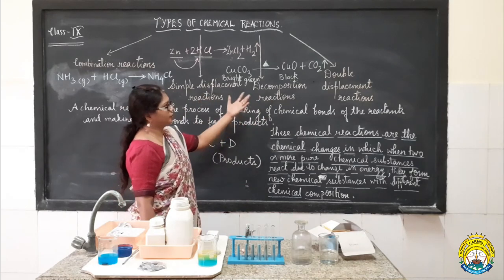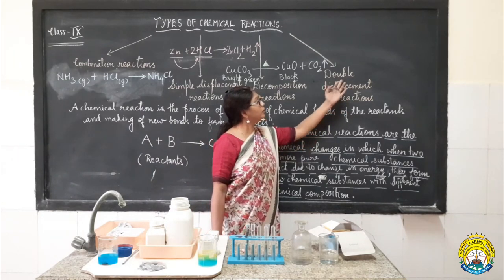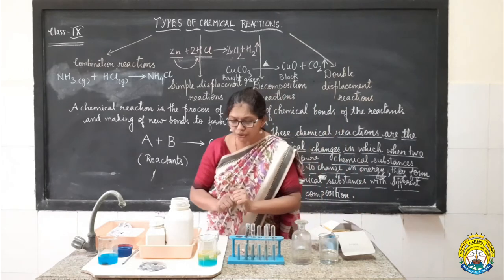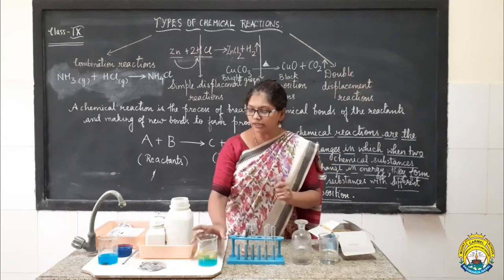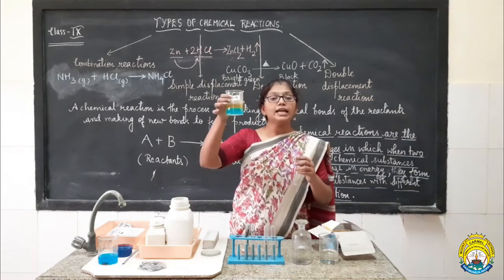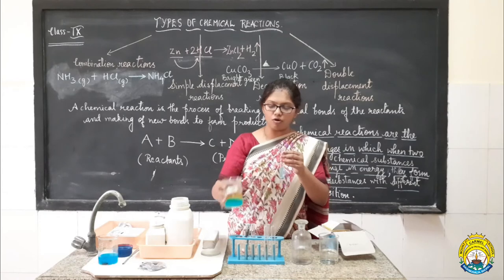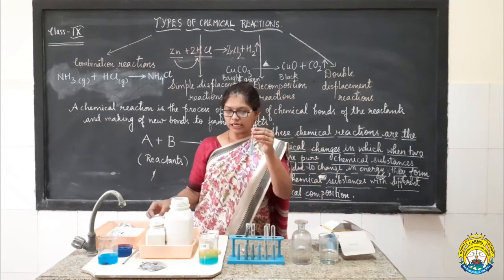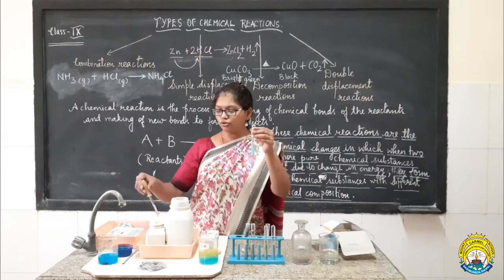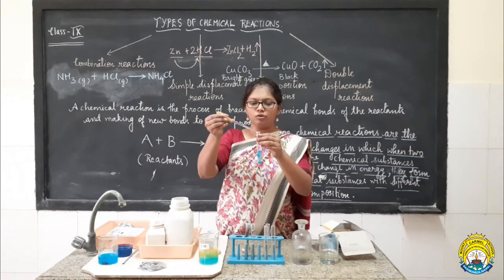Now let us come to the fourth category of chemical reaction, known as double displacement reaction. Moving towards double displacement reaction, I want to show you one more activity to understand how the double displacement reaction occurs. This is an aqueous solution of copper sulfate salt. I am taking a small amount of copper sulfate solution into this clean empty test tube. And now I am going to add a few drops of sodium hydroxide solution to the test tube, and let us observe what is going to form.